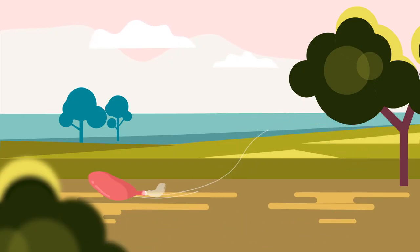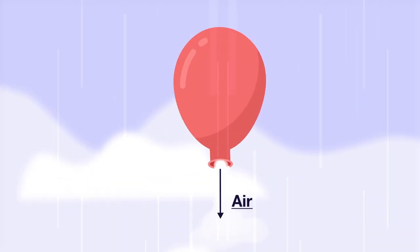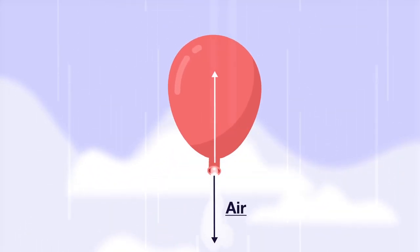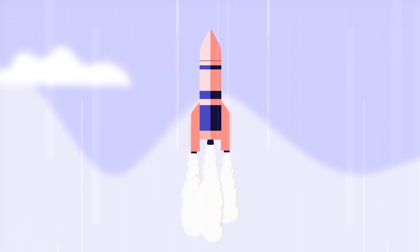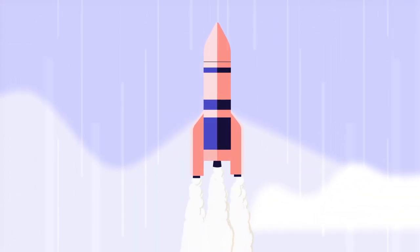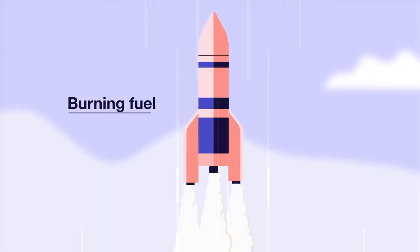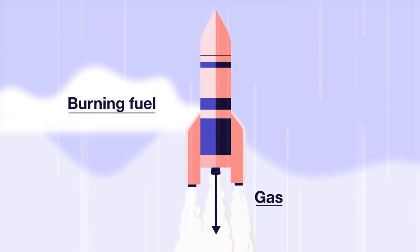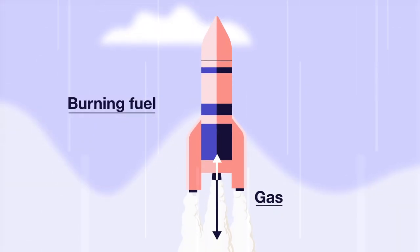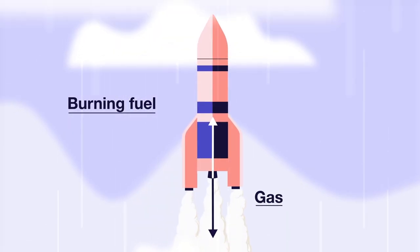You know when the air goes out of a balloon? The air goes one way and the balloon goes the other, right? Well, rocket engines do the same, but with fuel. By burning fuel, gas is pushed out insanely fast. That pushes the rocket the other way insanely fast.